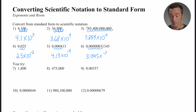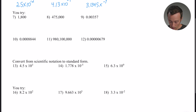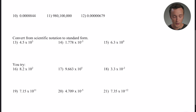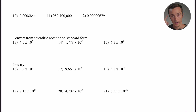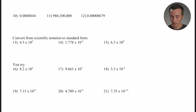Now let's look at number thirteen, which is essentially the opposite direction — they're giving you the number in scientific notation and you need to rewrite it in standard form. This is where the mental check of big numbers having positive exponents and small numbers having negative exponents helps you figure out which direction to move the decimal.